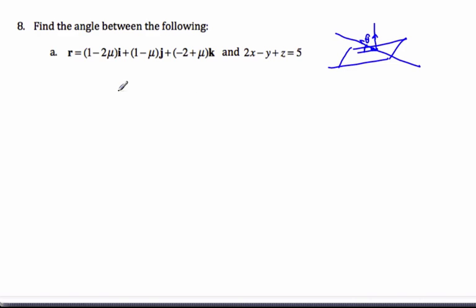So I've got to get my direction vector for my line, which is negative 2, negative 1, 1. And I'm going to dot product it with the normal of the plane, which is 2, negative 1, 1.